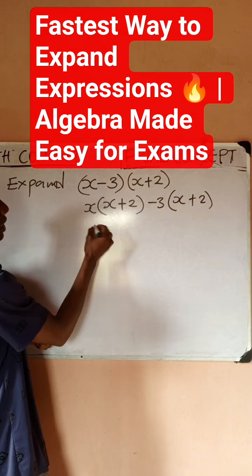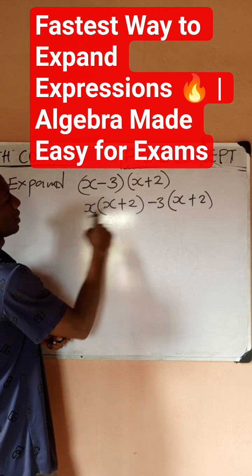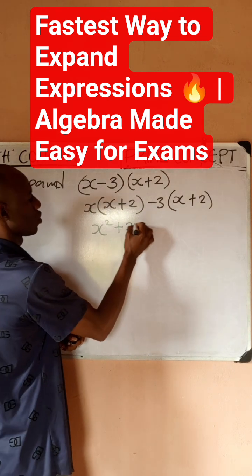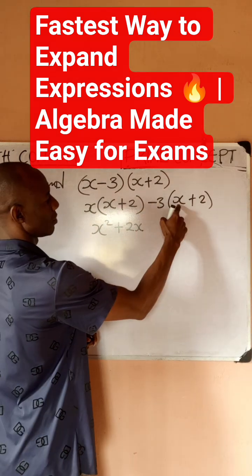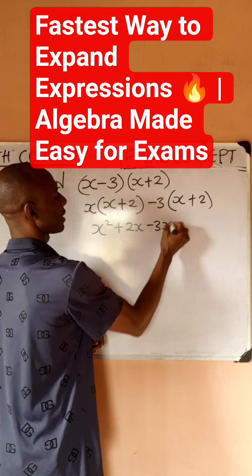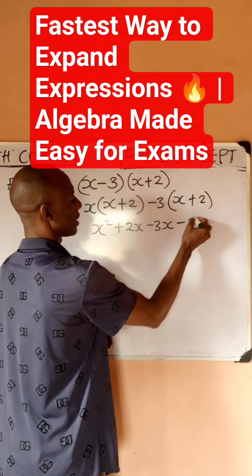x times x is x squared. This times this is plus 2x. This times this is minus 3x. This times this is minus 6.